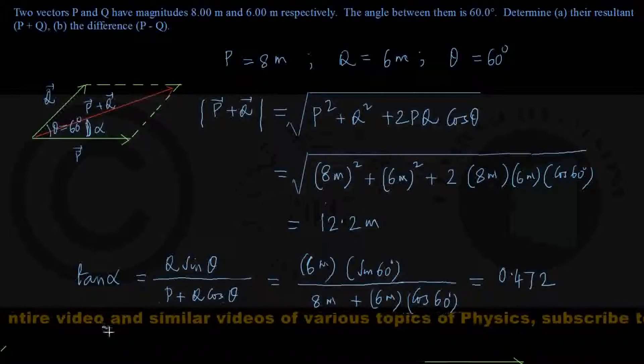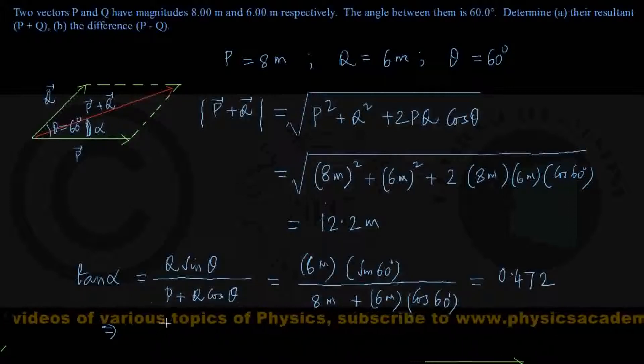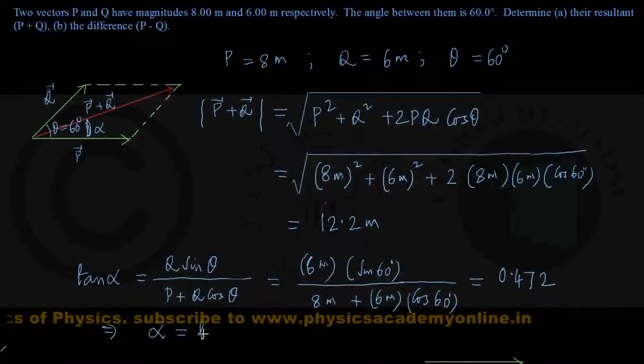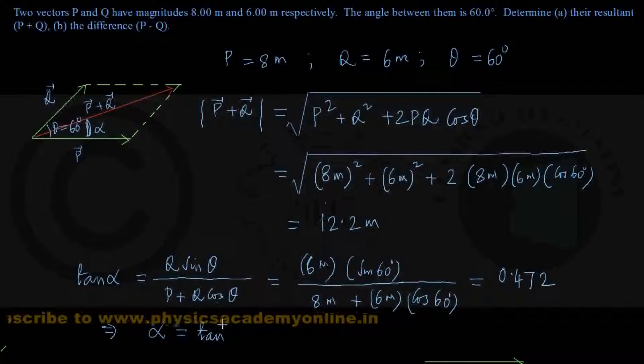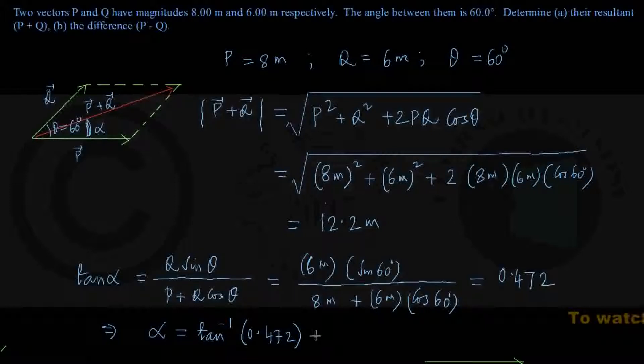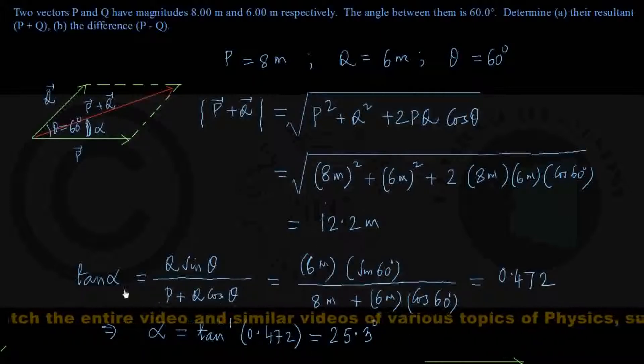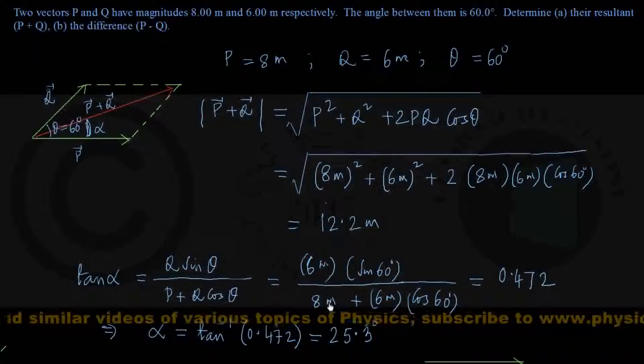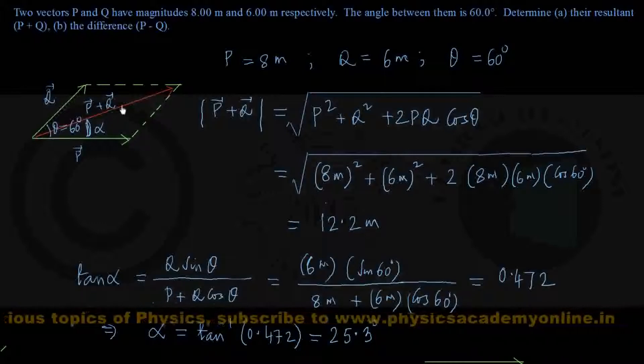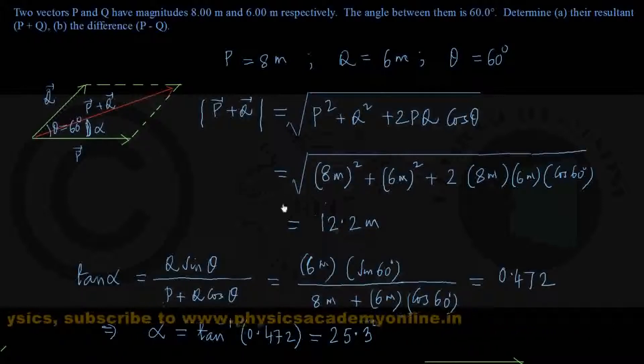You can show that alpha equals tan inverse of 0.472. If you have a calculator, this angle comes out to three significant figures as 25.3 degrees. The resultant P plus Q has magnitude 12.2 meters directed at an angle of 25.3 degrees with the combining vector P. That is the complete answer for the first part of the question.